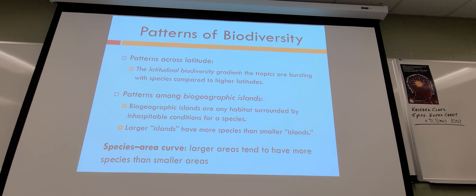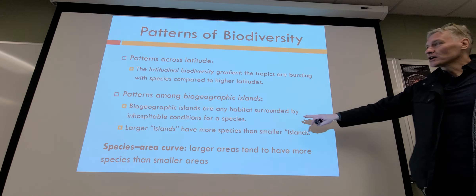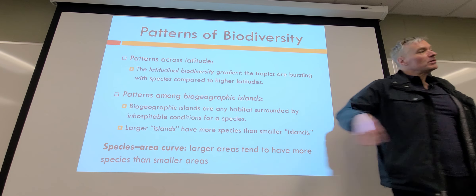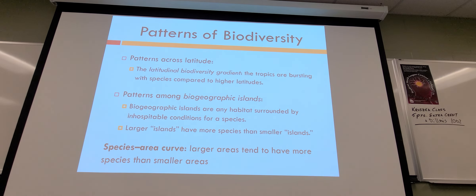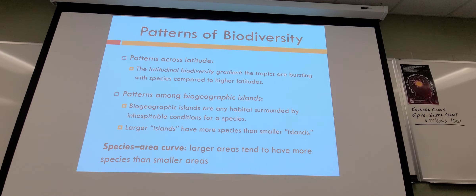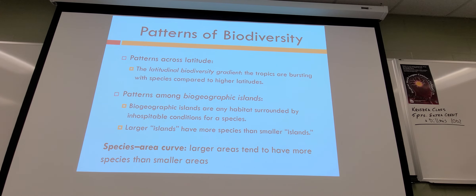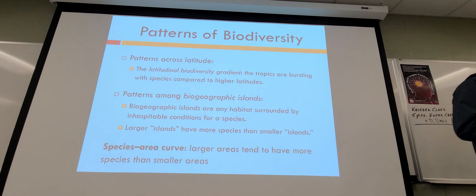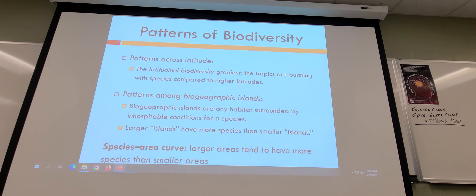Patterns of biodiversity: places tend to have more biodiversity if they have larger amounts of land. When we talk about biogeographic islands, you can picture actual islands, but it's also more metaphorical — you'll have zones of tolerance for different species where they can't survive outside their little zone. For example, fire ants have spread up to North America from warmer climates, but they can't survive anywhere that has a freeze. So there is a zone of tolerance.